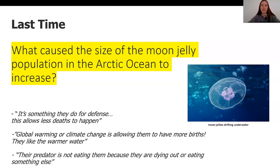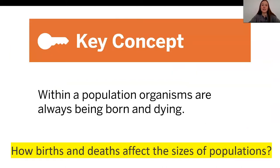Another idea was about a decrease in deaths — students thought that a predator of the moon jellies is not eating them as often, and is either dying out or eating something else. These were all great ideas. Right now we have no evidence about what's going on, and so that's why we have to collect some evidence to figure out which of these claims could be correct.